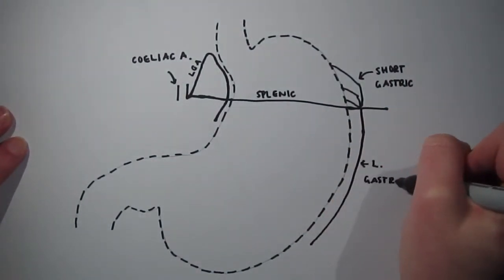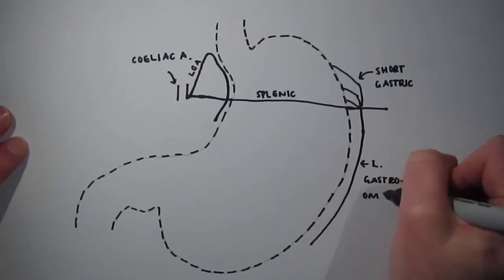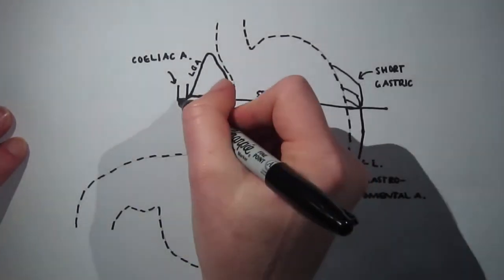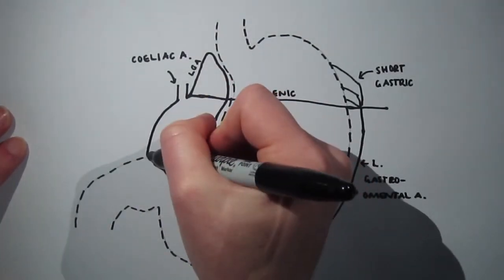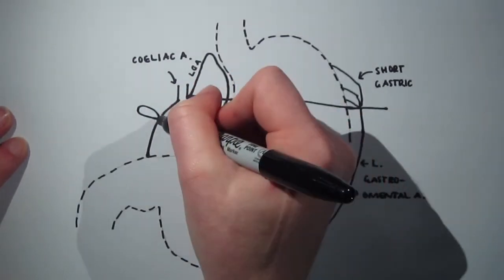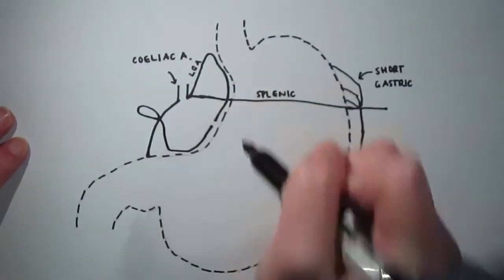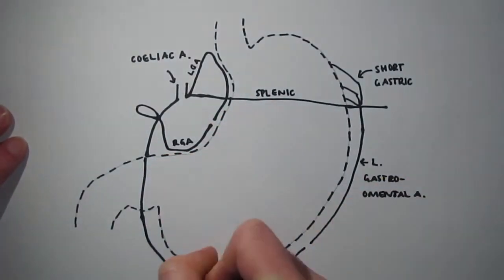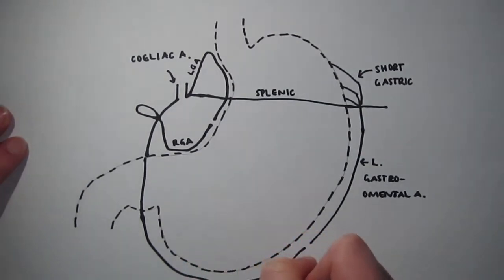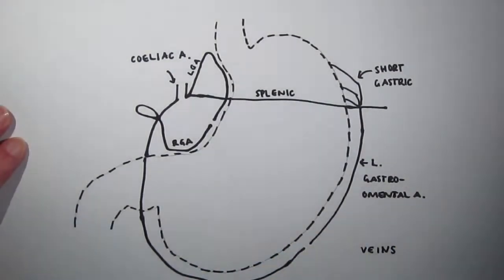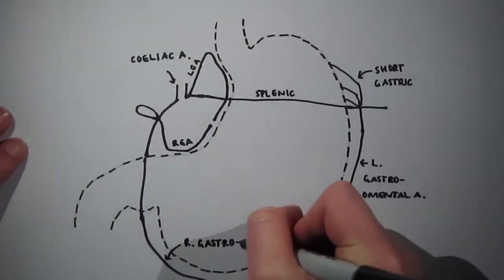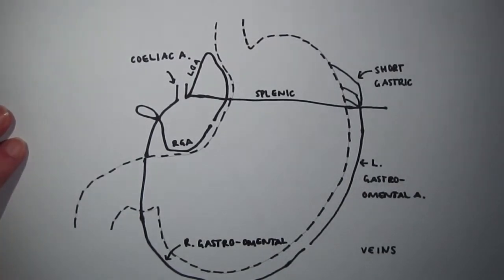The left gastro-omental artery, another branch of the splenic artery, supplies the greater curvature superiorly. The right gastric artery, which comes off the common hepatic artery, supplies the lesser curvature inferiorly. The right gastro-omental artery, a branch of the gastroduodenal artery, supplies the greater curvature inferiorly.